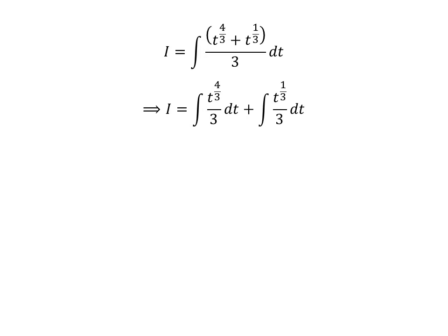The integrand can be expressed as a sum of two fractions. Applying the linearity property of the integral gives us I is equal to the integral of t raised to the power of 4 upon 3, divided by 3, with respect to t, plus the integral of cube root of t divided by 3, with respect to t.